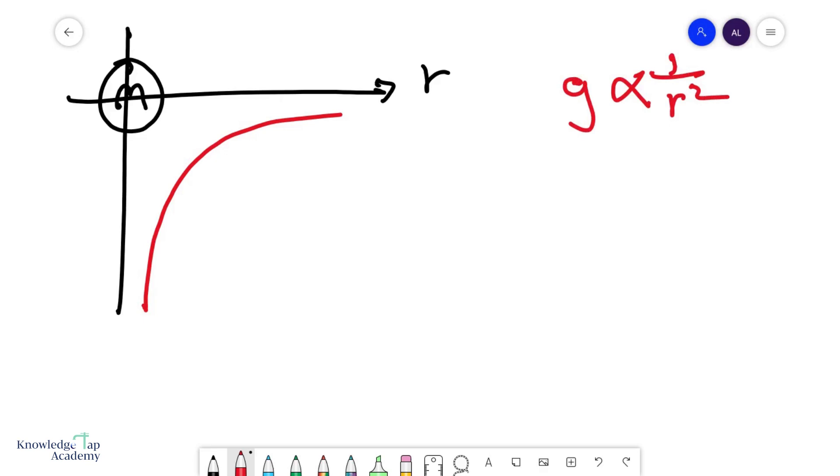The reason why it's negative is because if we take the positive r to be in this direction here, then of course we know that g points in the other way. And that's why, by default, we draw a negative graph.